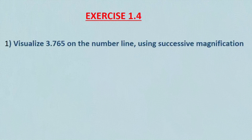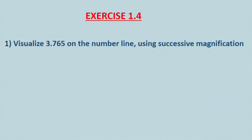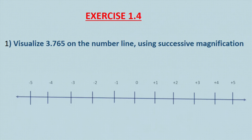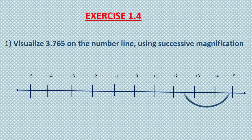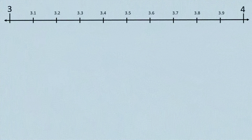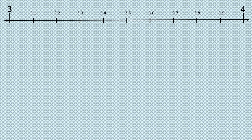The first question in Exercise 1.4 is: visualize 3.765 on the number line using successive magnification. Since 3.765 lies between 3 and 4 on the number line, we focus between 3 and 4. To get a more accurate visualization, we divide the number line into 10 subdivisions between 3 and 4 and use a magnifying glass to focus the number between 3.7 and 3.8.